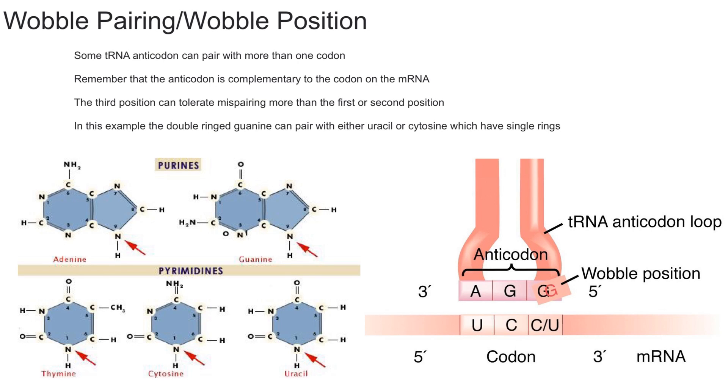Before we begin, we have to remember that the wobble hypothesis is referring to translation. Remember that translation is when you take an mRNA piece, as you can see right here, and you use tRNAs to create a protein or polypeptide. The wobble pairing has to do with translation.